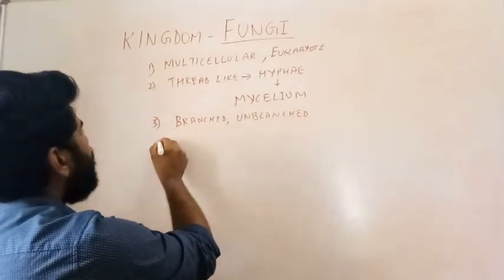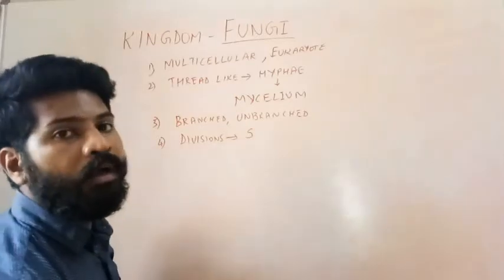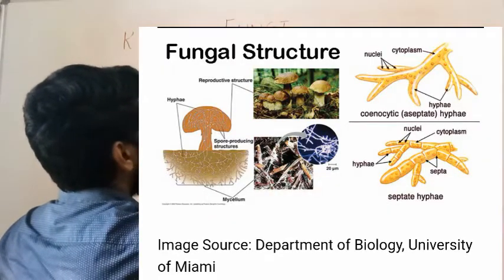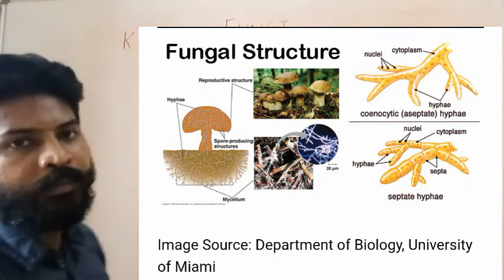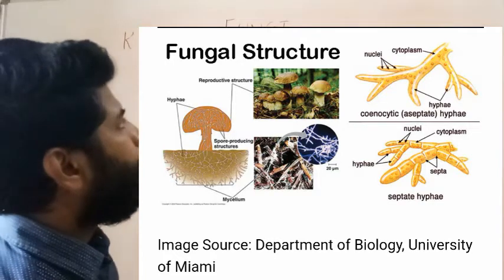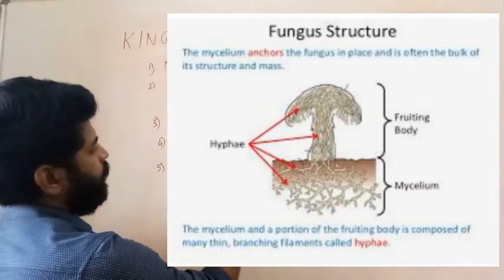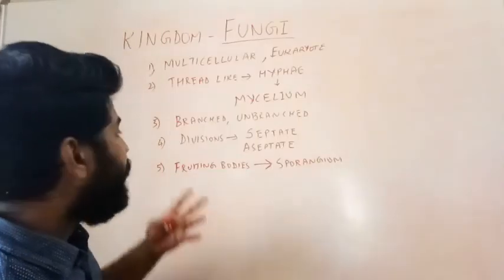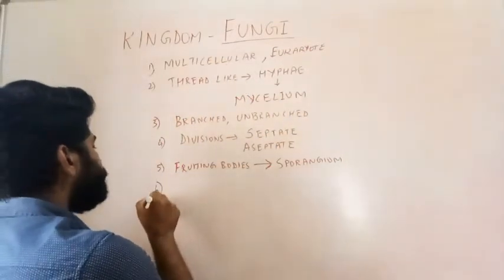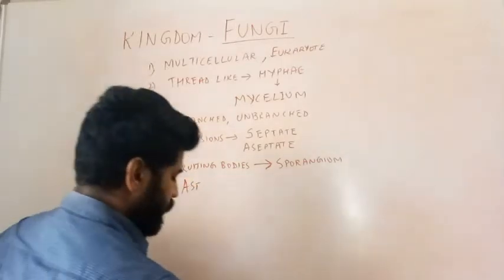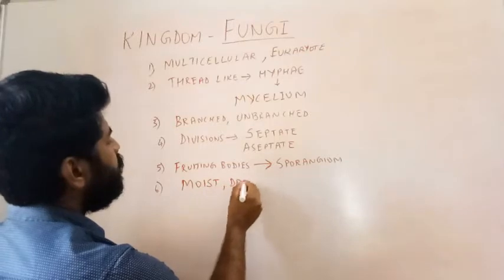The hyphae can be branched, and if branched, it may have divisions called septa. So the mycelium can be either septate — with divisions — or aseptate — without divisions. On reaching maturity, the mycelia produce fruiting bodies. There are different types of fruiting bodies, and based on the fruiting body, the fungus is further classified. Mostly fungi are present in moist, dark areas.